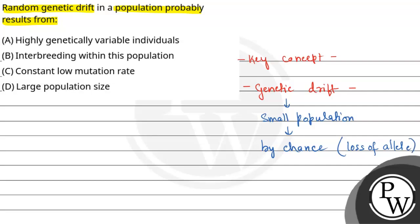What are alleles? These are pairings within our genes. Any character always has two pairs present together — one coming from the mother and one from the father — and one gene from that pair is called an allele. And one of the biggest causes of genetic drift is interbreeding.